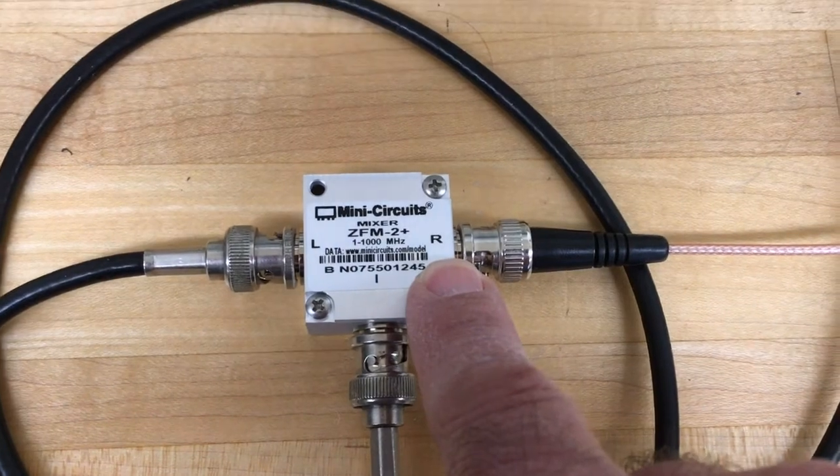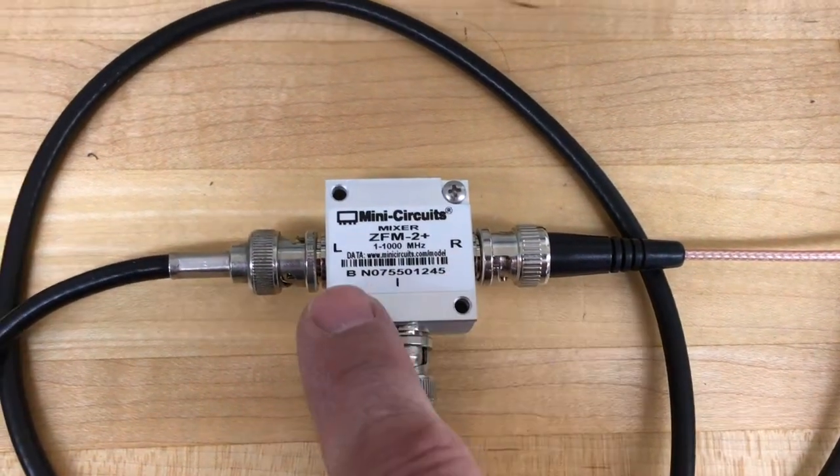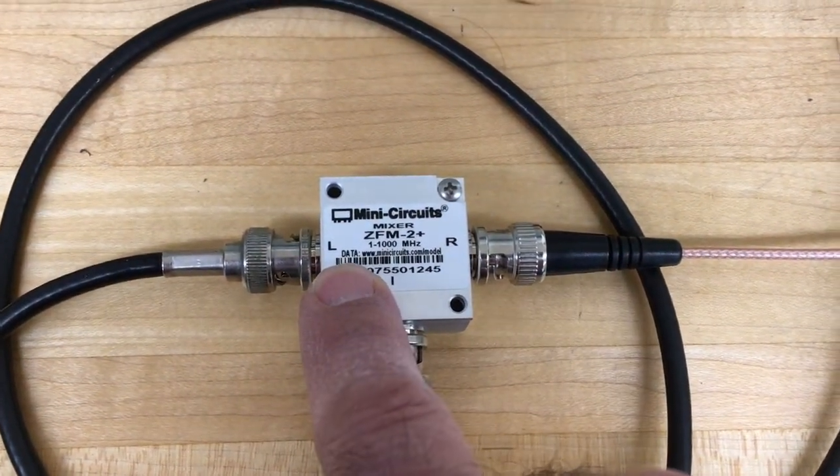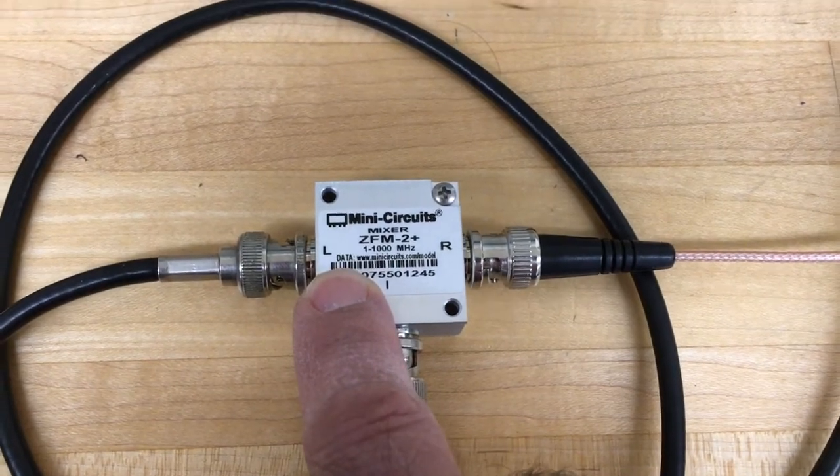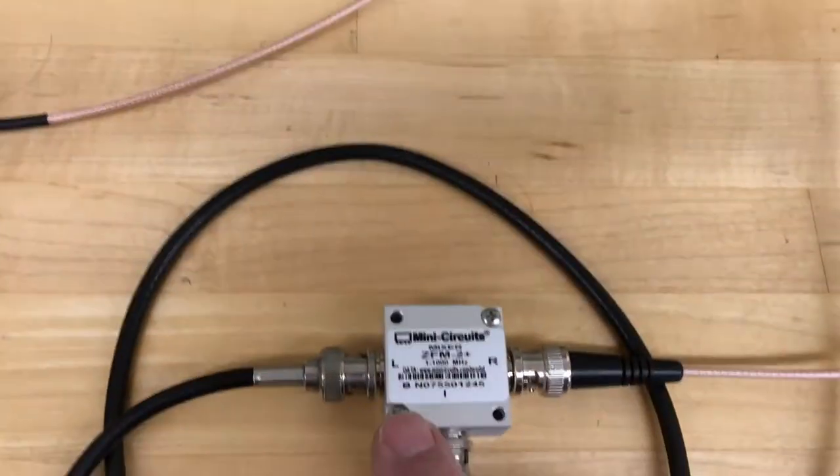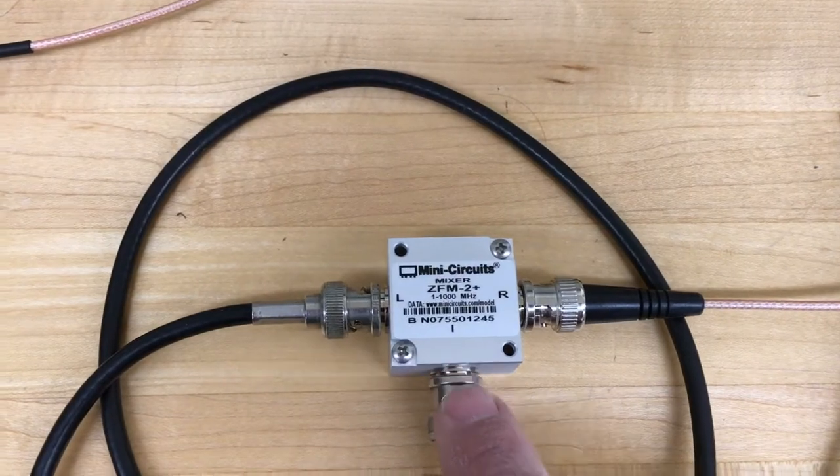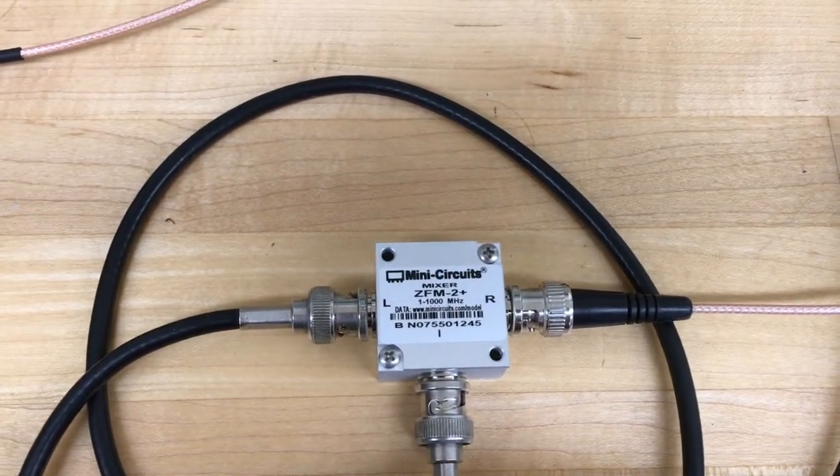So if our RF signal is at 400 megahertz, and we mix it with a signal at 410 megahertz from our function generator, then what should come out would be a 10 megahertz difference signal.